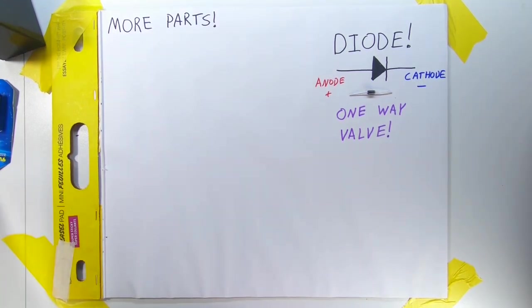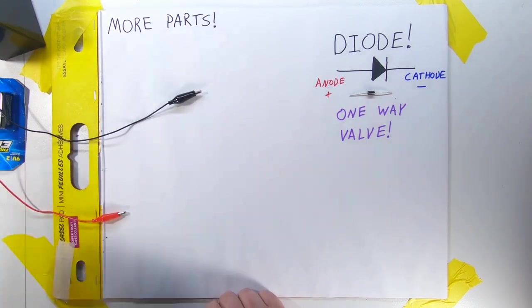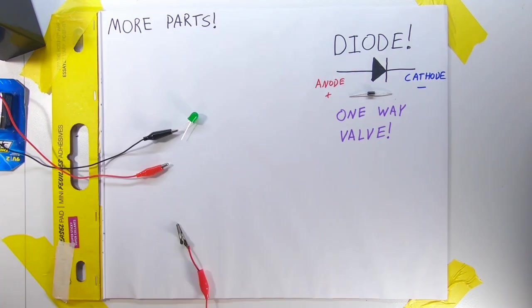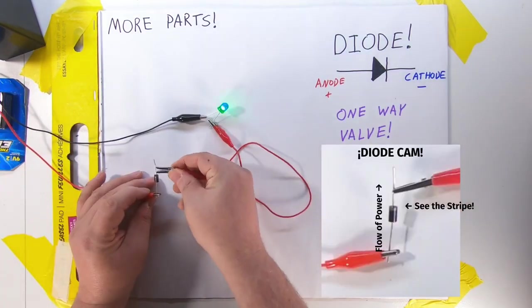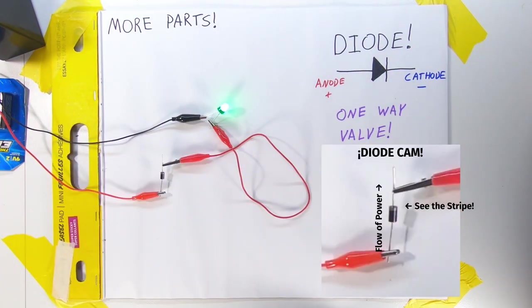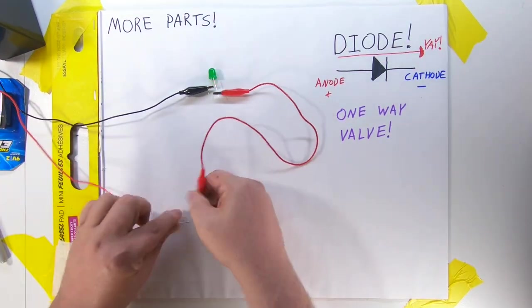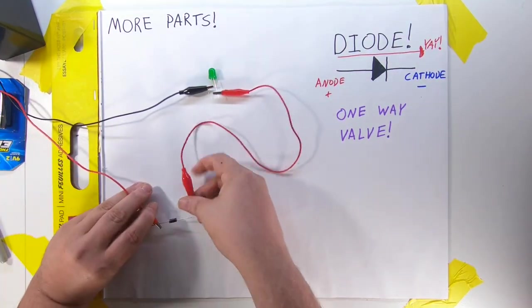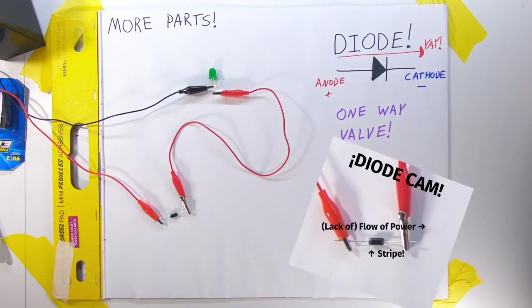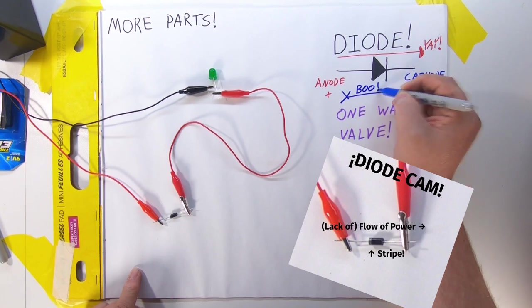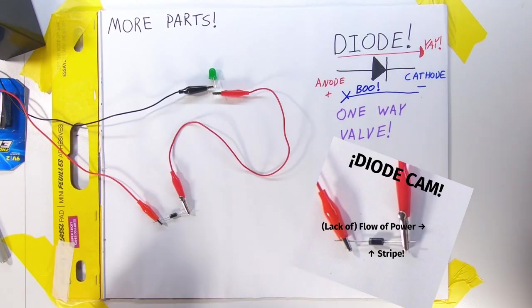Alright, so let's model how this one works. We'll take our trusty green LED and wire the diode in series with it. With the anode pointed toward the positive side and the cathode pointed toward the negative side, as you can tell by the stripe on the diode, power flows normally. Yay! But if the diode is flipped, with the anode towards the negative side, the power does not flow. Boo! See the stripe for verification.